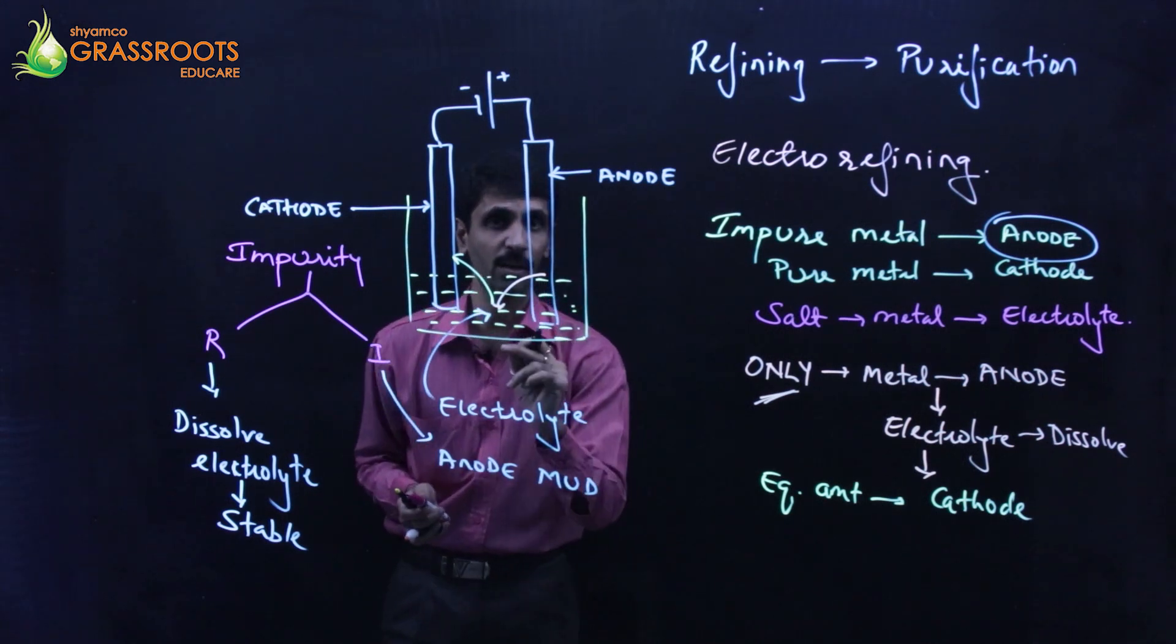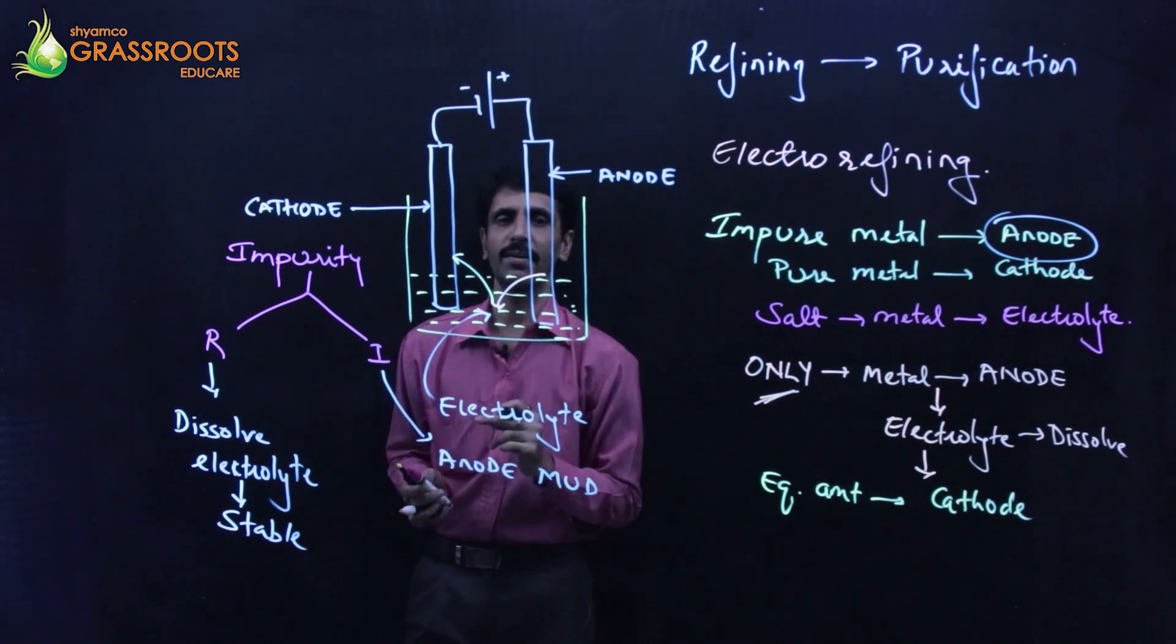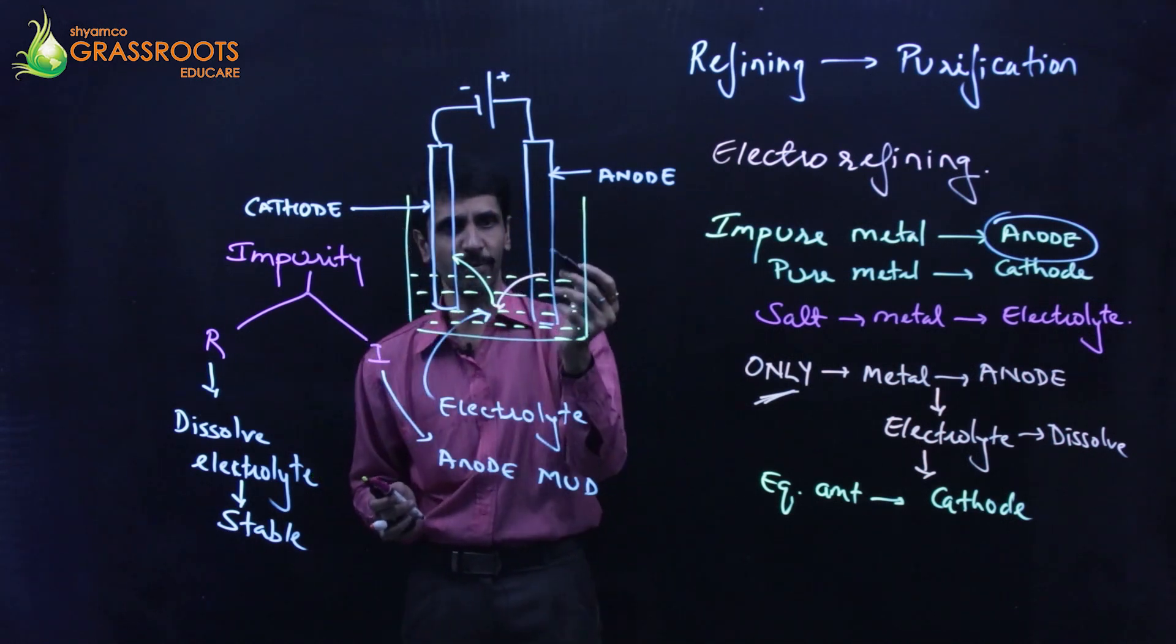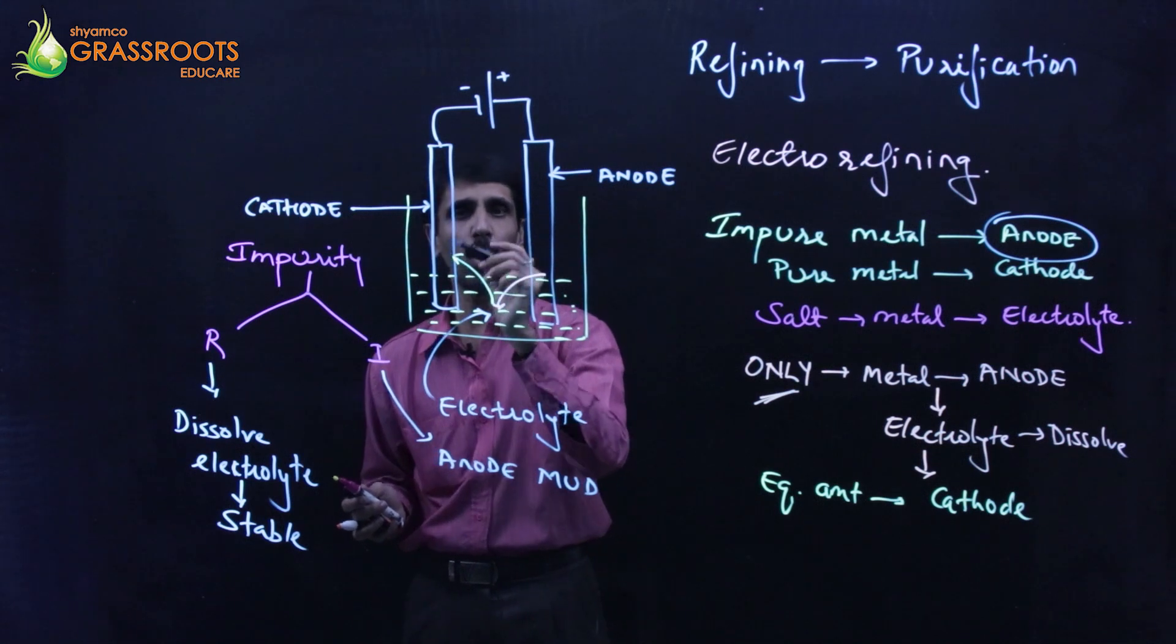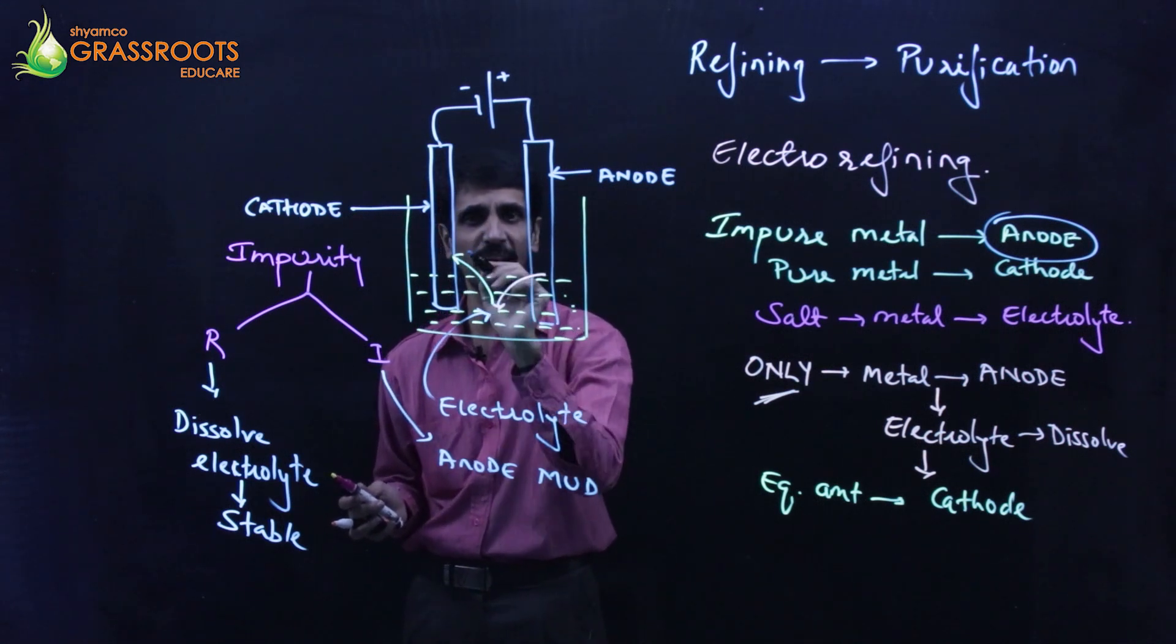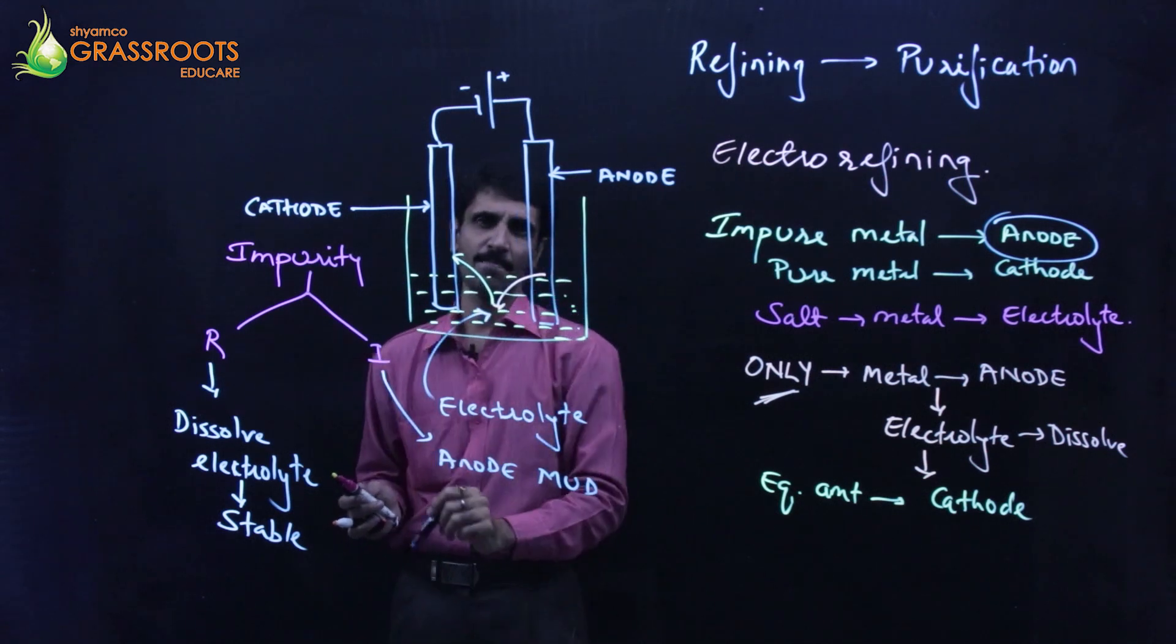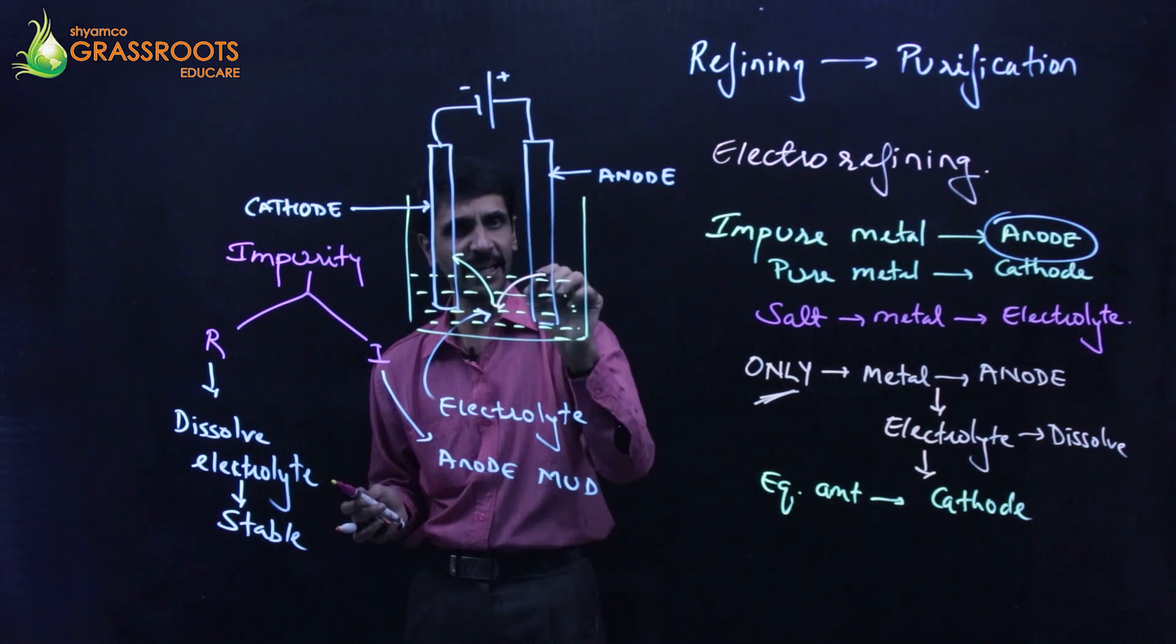If the impurity is reactive, it will remain in the electrolyte. So if you can understand this entire part, what happens is as we go from the anode and reach the cathode, the only species which is going to reach there up to the cathode is nothing but the metal. The impurity either goes towards the electrolyte or it remains at the anode itself.